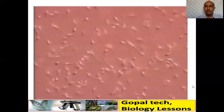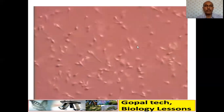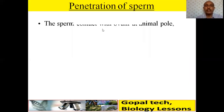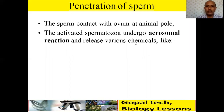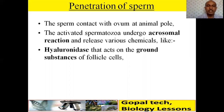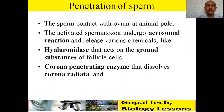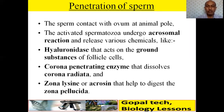The activated spermatozoa, after capacitation, undergo the acrosomal reaction and release various chemicals: hyaluronidase, which acts on the ground substances of follicle cells; corona-penetrating enzyme, which dissolves the corona radiata; and zona lysin (acrosin), which helps digest the zona pellucida. These three enzymes are secreted by the acrosome and allow sperm penetration of the ovum.